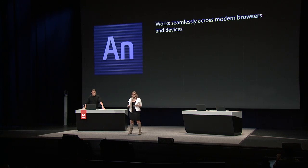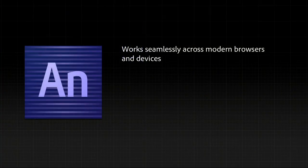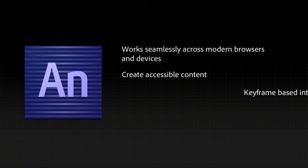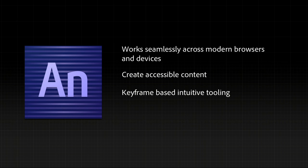Adobe saw the need to allow web designers to easily create animated content on the web, and this is where Edge Animate comes in. You can work seamlessly across modern browsers and devices because it works with a WebKit-based stage and natively with HTML, CSS, and JavaScript. You can create accessible content — a big problem historically where content gets stuck behind a plugin or graphic, and screen readers and Google can't access it. With Animate, since it works with HTML, your content is indexable, searchable, and accessible to screen readers. It also uses keyframe-based intuitive tooling influenced by Flash Pro and After Effects.